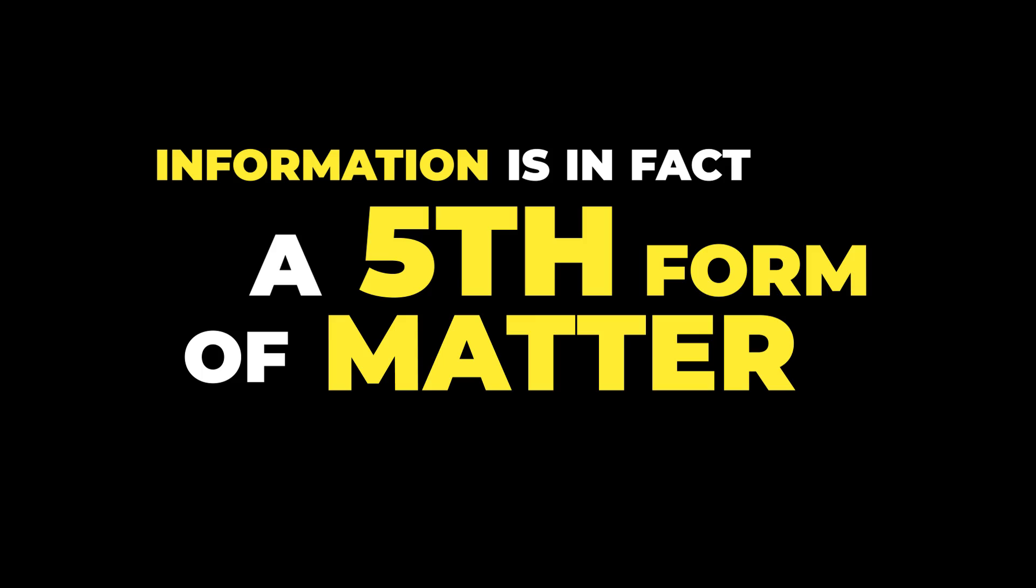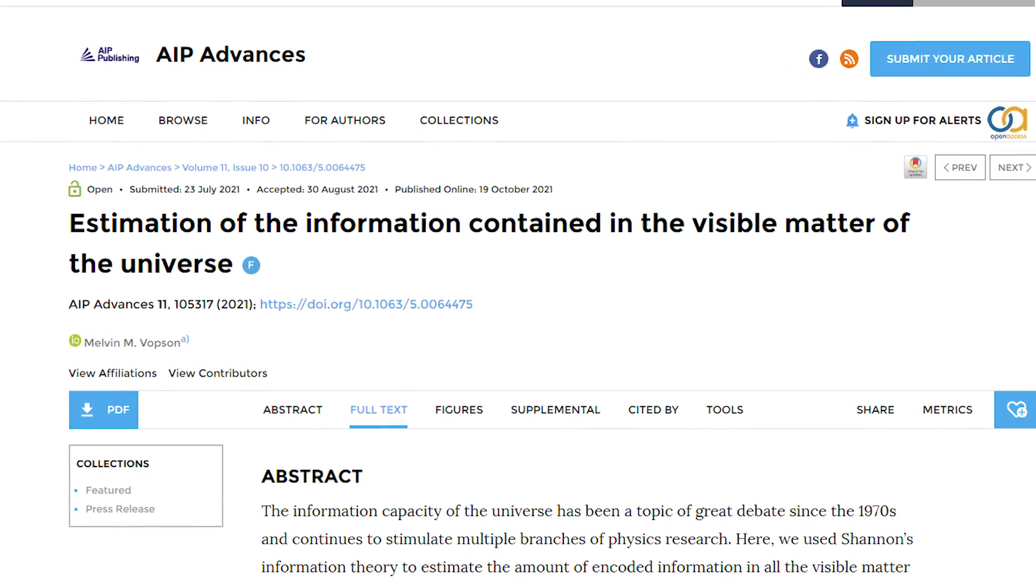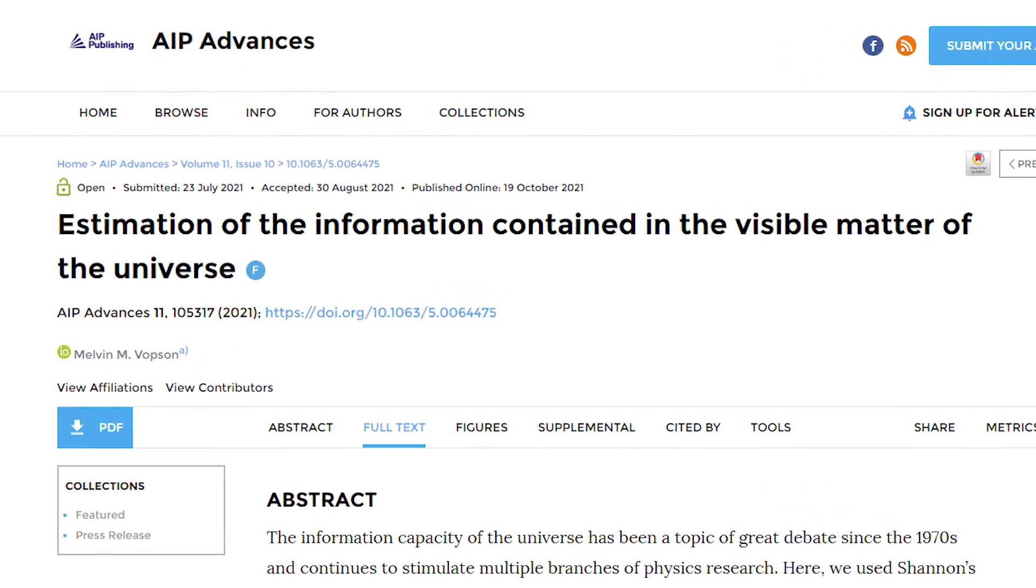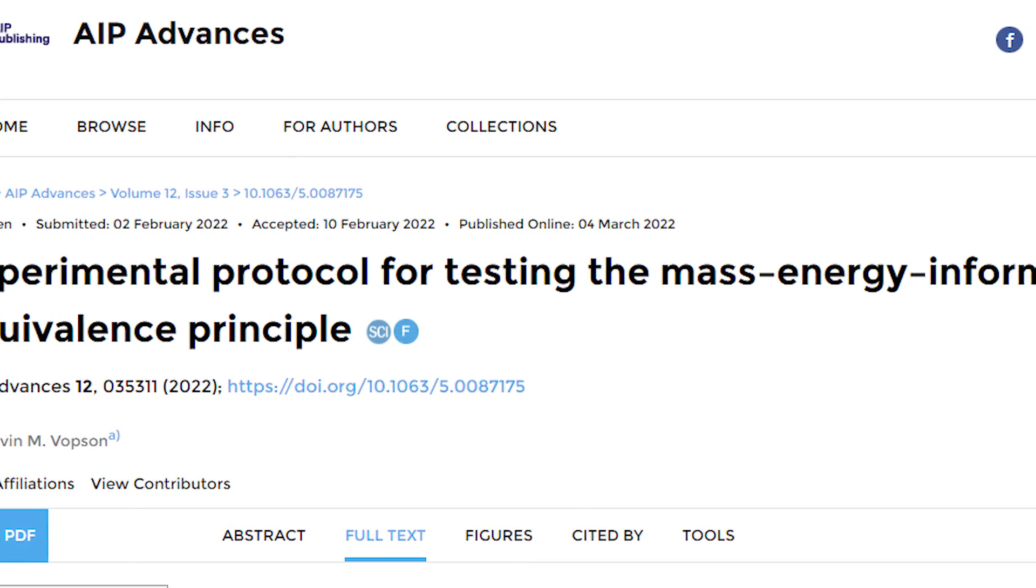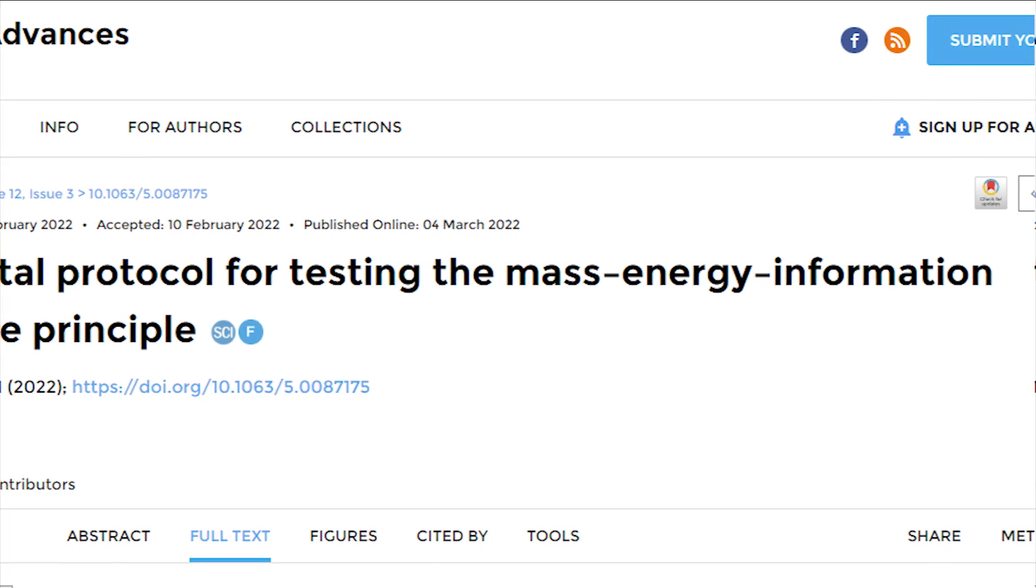Physicist Melvin M. Vobson from the University of Portsmouth, also the author of this story, has postulated that information is in fact a fifth form of matter in the universe. He's even calculated the expected information content per elementary particle. These studies led to the publication in 2022 of an experimental protocol to test these predictions.